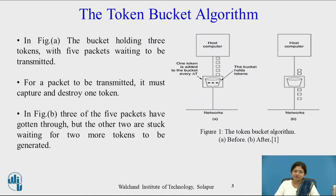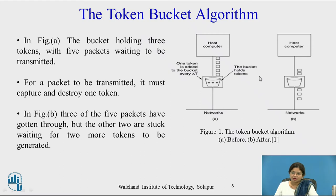Now look at figure 1. The bucket is holding 3 tokens with 5 packets waiting to be transmitted. For a packet to be transmitted, it must capture and destroy one token. Now look at another diagram, figure B: 3 of the 5 packets have gotten through, but the other 2 are stuck here waiting for 2 more tokens to be generated.